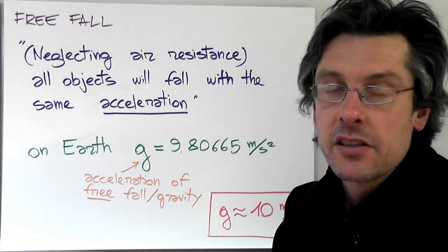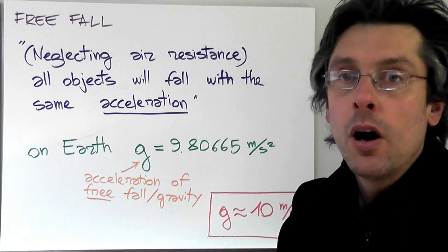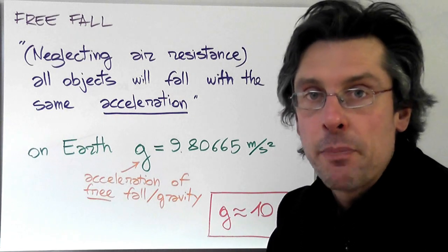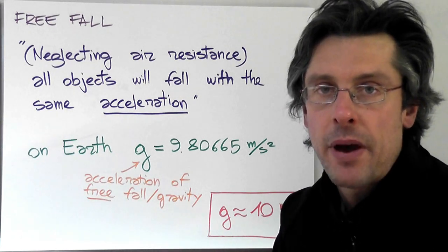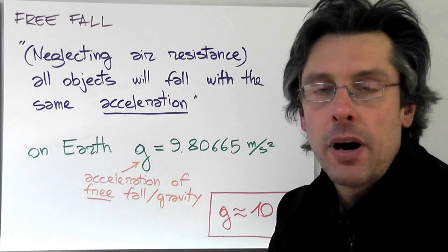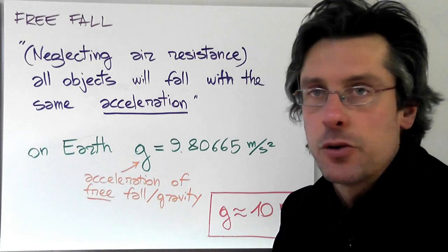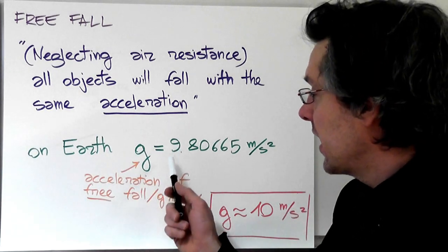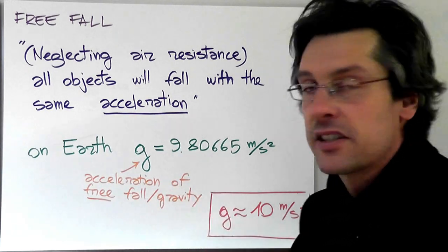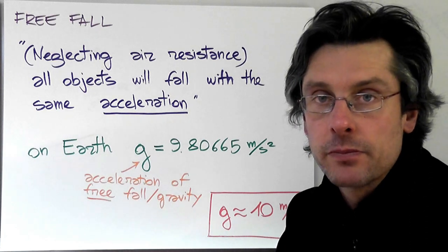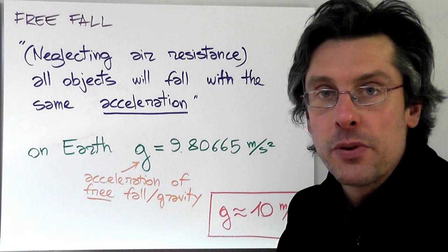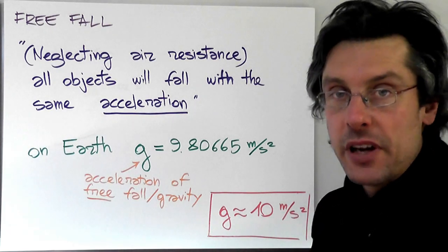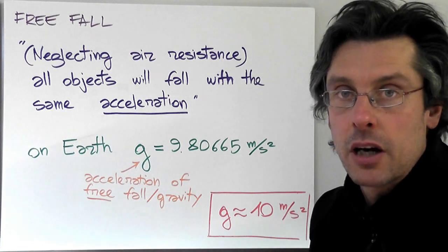And we call that the acceleration of free fall or the acceleration of gravity. And as the name says, it depends on the gravity force field. So it depends on which part of the planet, on which planet you are. And on Earth, the value of g is measured as 9.80665 meters per second squared. Now, for practical purposes, we're going to round up that number to 10, which is a very easy number to use in our calculations.